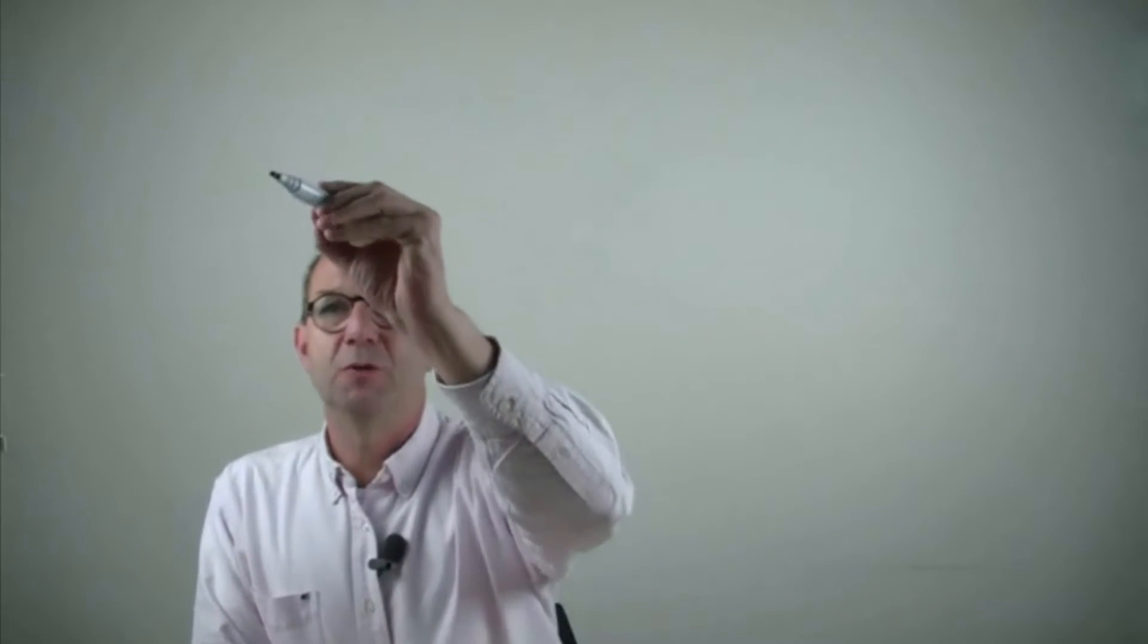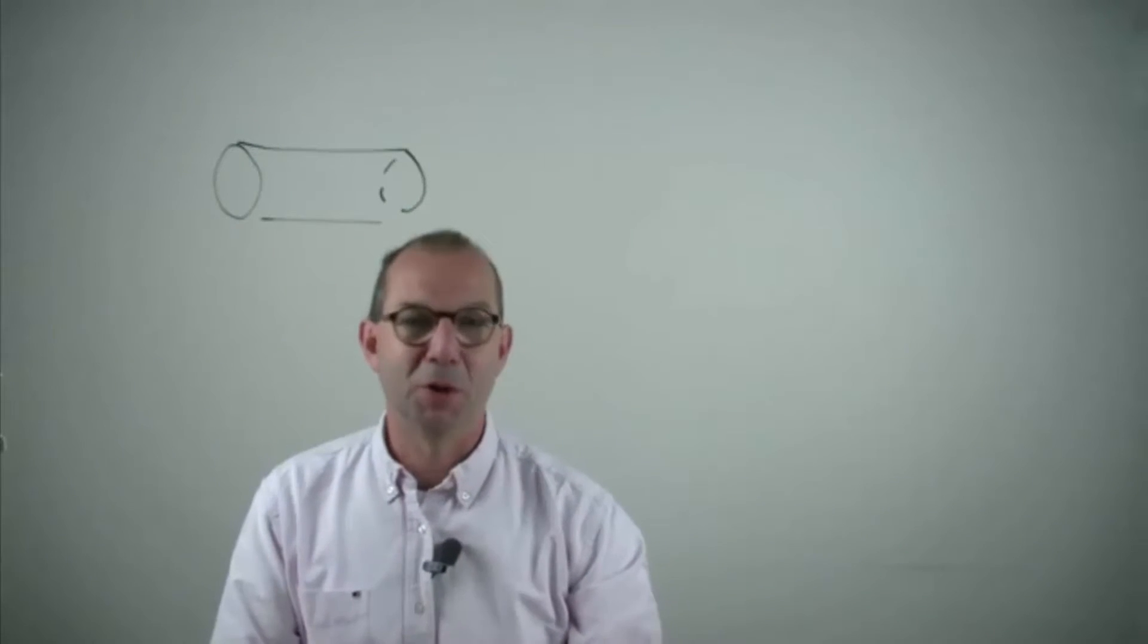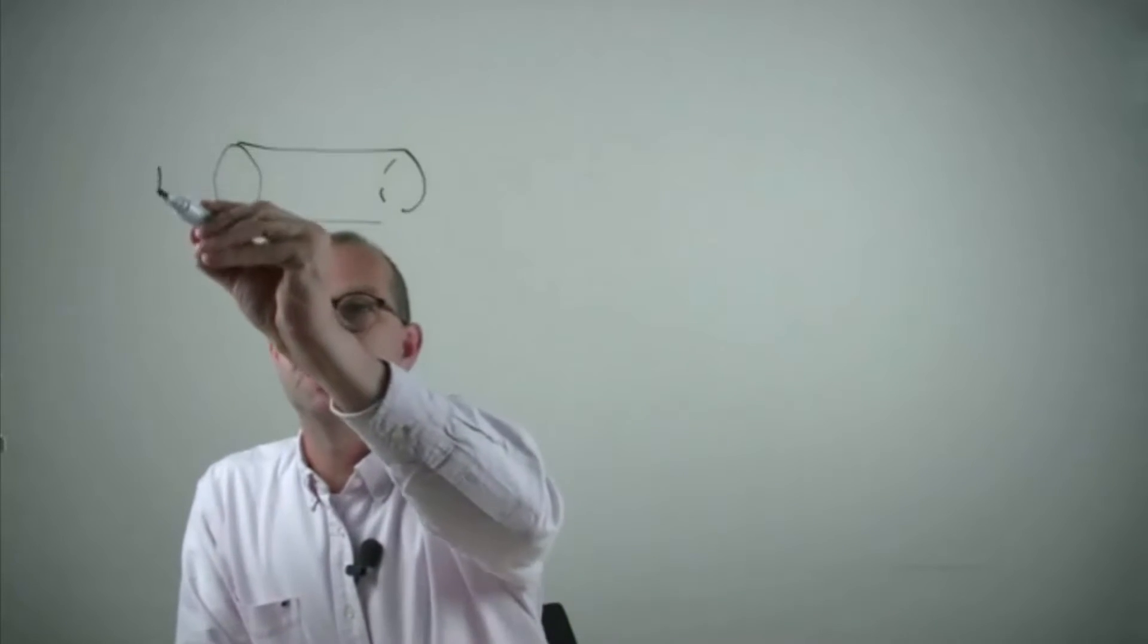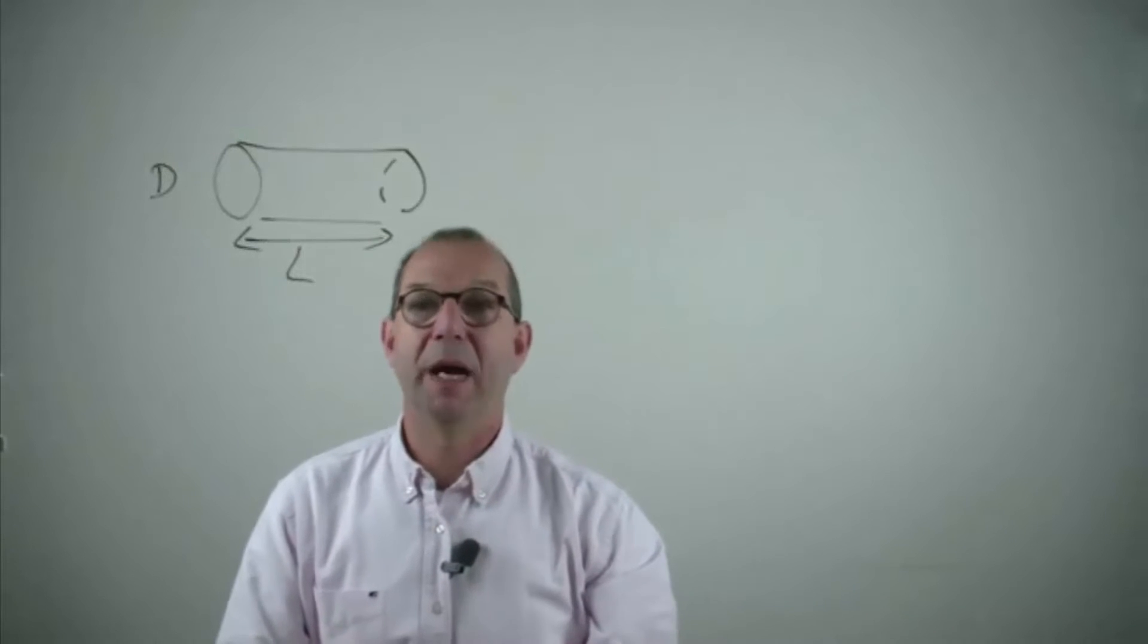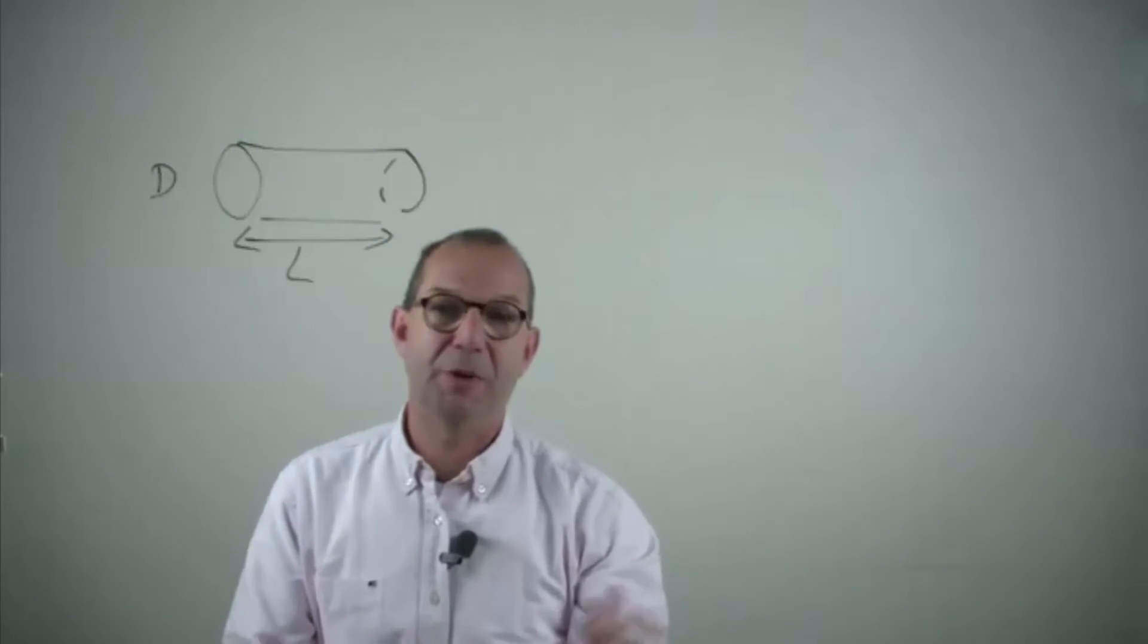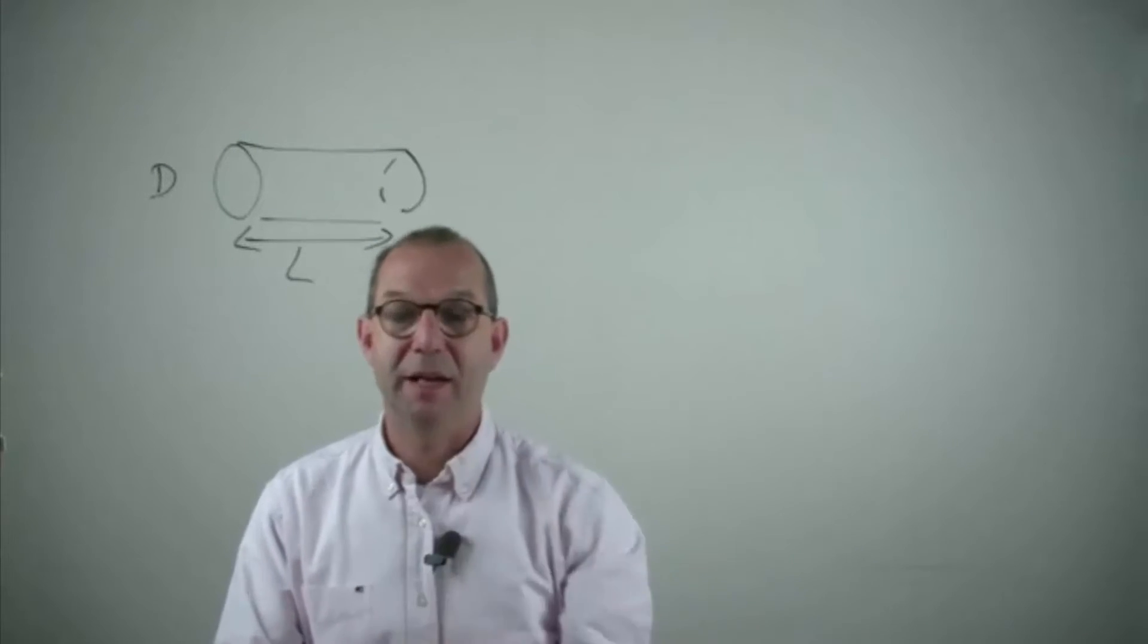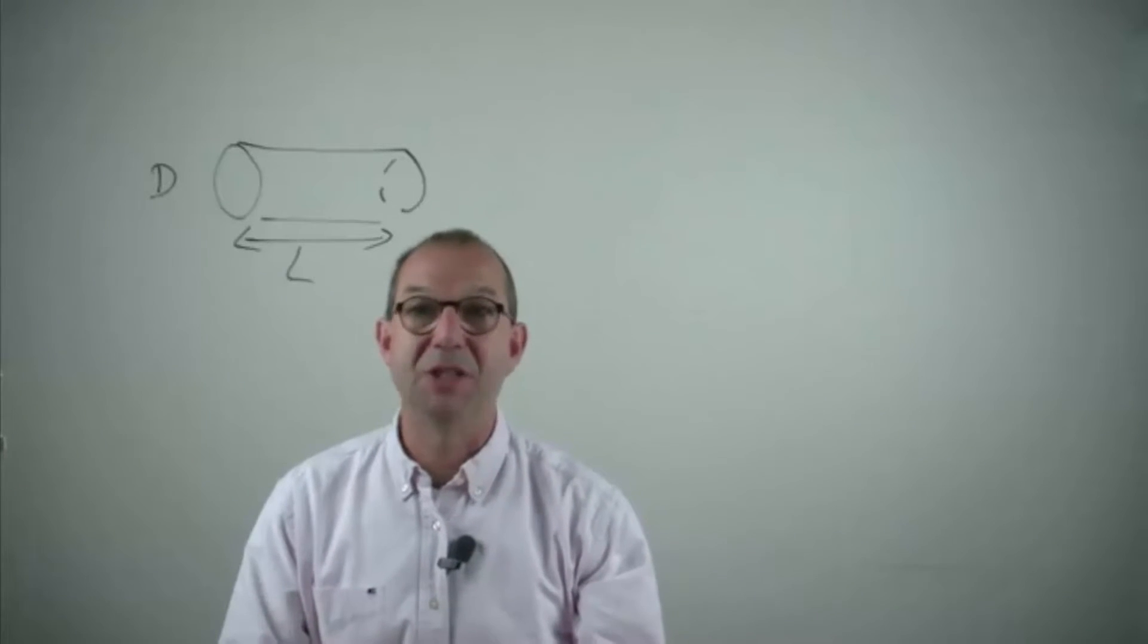So our system, if we draw it, here is a human being, well not exactly, but a model of it. Basically a cylinder of diameter D and length L. In the suits we were wearing, an estimate of D would be something like 40 centimeters and the length is about my height, 1 meter 80.